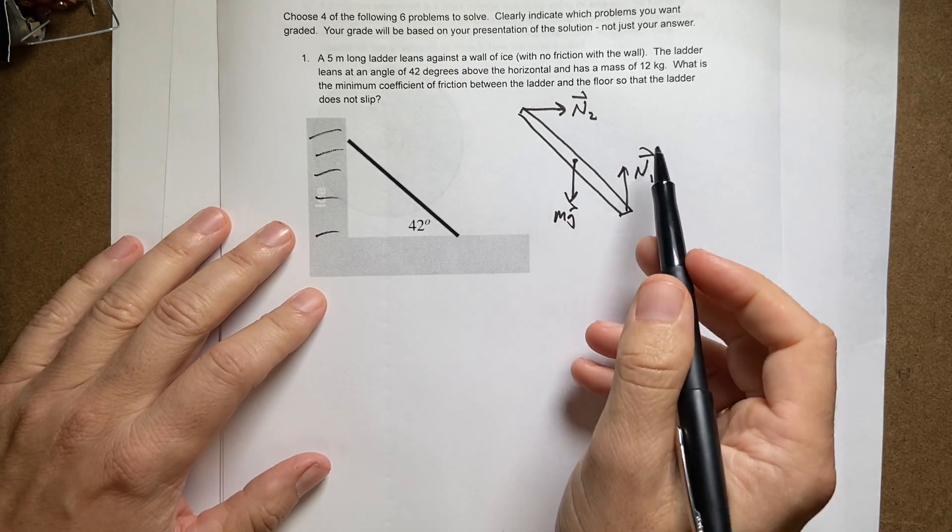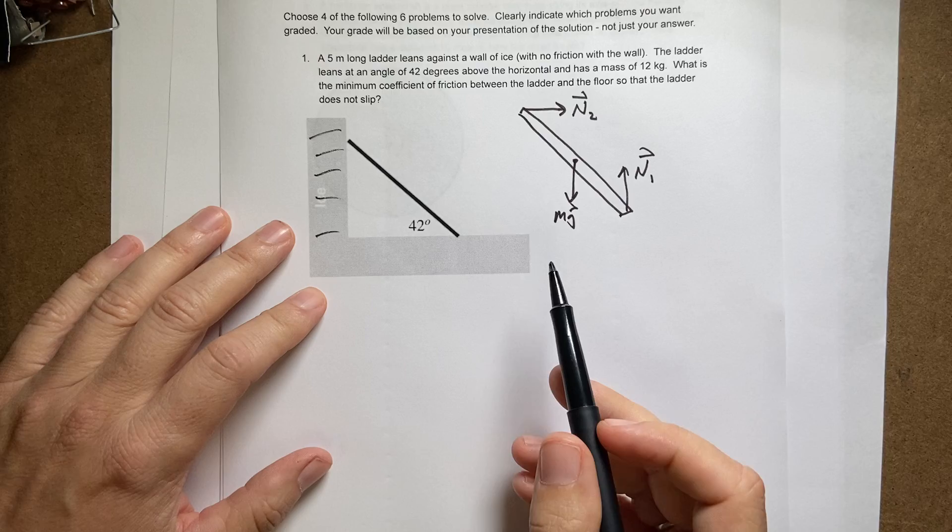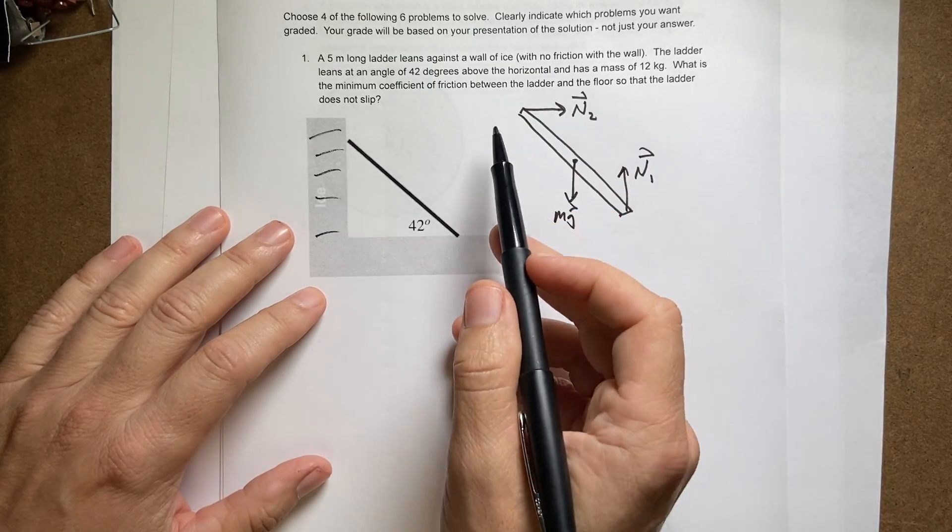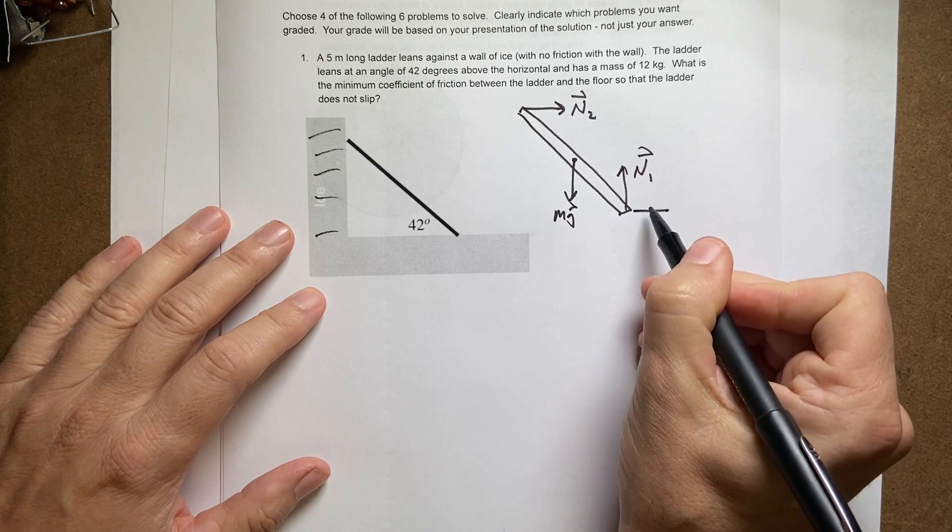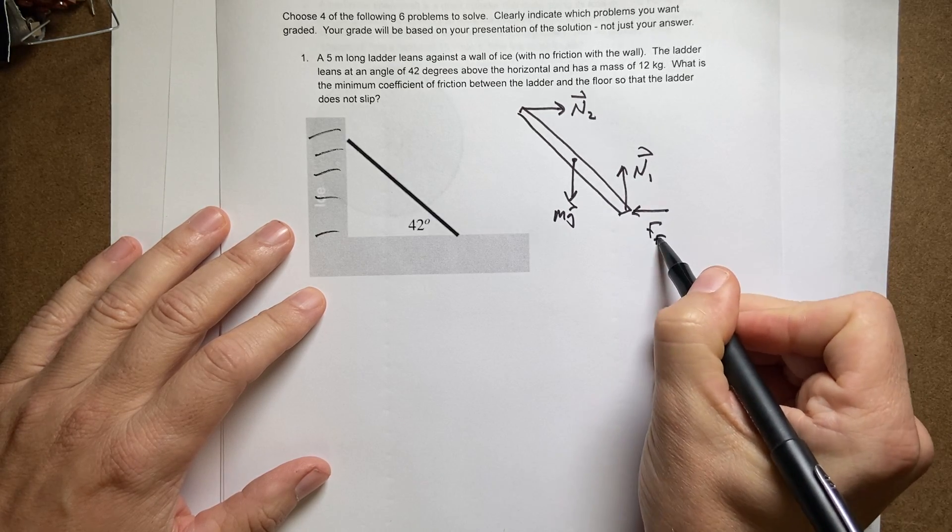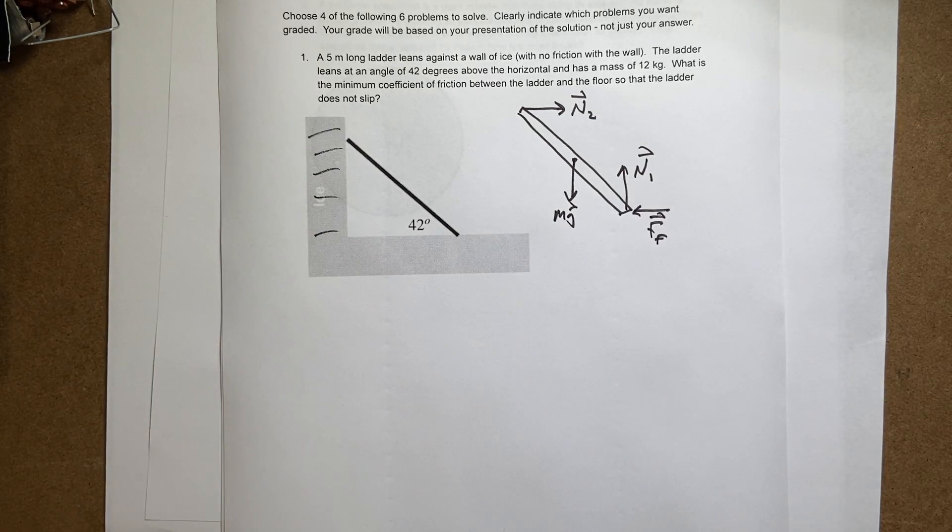And then finally, you notice here that if the ladder is in equilibrium, then there's no way I can add these forces up to zero because there's nothing pushing this way. So I need another force. I'll put it right here, F friction. And that's that.